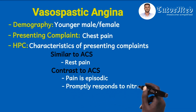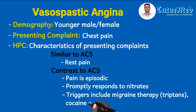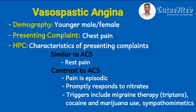Sometimes the pain can be triggered by several factors, including migraine therapy such as triptans — for example, if someone is given sumatriptan for migraine and is predisposed to vasospastic angina, they may develop it. Recreational drugs such as cocaine and marijuana can also trigger it, as can drugs that augment the activity of the sympathetic nervous system — sympathomimetics — and certain beta-blocker-based drugs.